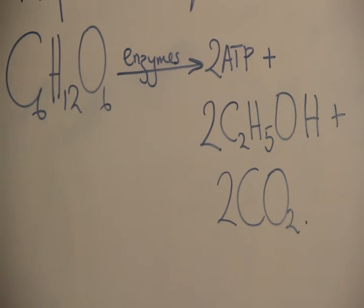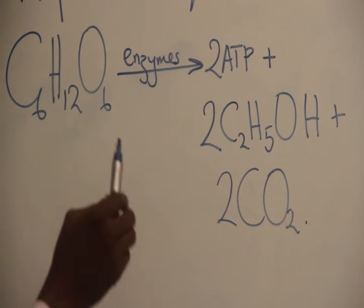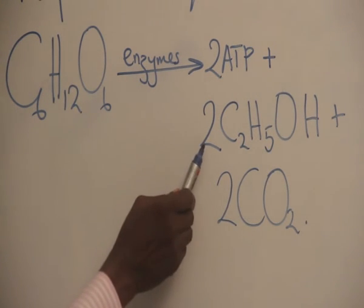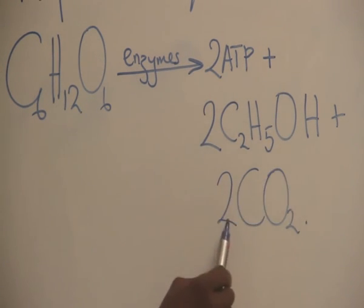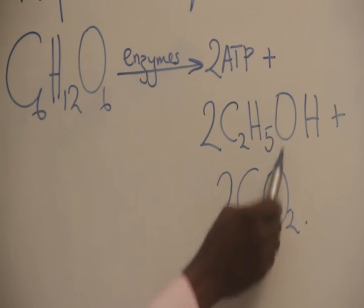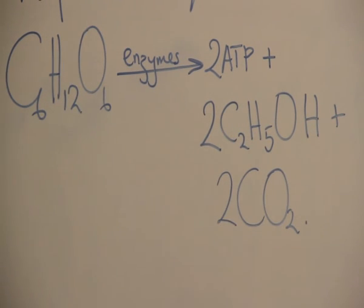Are we okay with the oxygen? Let's look at the oxygen. Oxygen is six. Two times one, two. Two times two, four. Four plus two, six. This is a balanced equation.